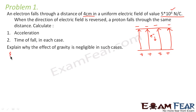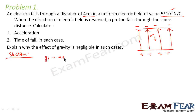Let us first calculate the acceleration and time of fall for the electron. The movement of the electron takes place along the y-axis, so y1 is equal to 4 cm, that is 4 into 10 to the power minus 2 meters. The magnitude of the electric field E is equal to 5 into 10 to the power 4 newton per coulomb.